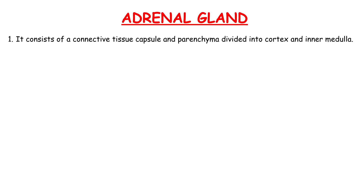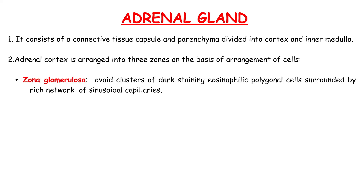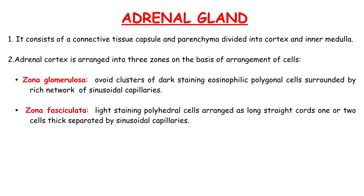Adrenal Gland. It consists of a connective tissue capsule and parenchyma divided into cortex and inner medulla. The adrenal cortex is arranged into three zones based on the arrangement of cells. Zona glomerulosa consists of clusters of dark staining eosinophilic polygonal cells surrounded by a rich network of sinusoidal capillaries. Zona fasciculata contains light staining polyhedral cells arranged as long straight cords, one or two cells thick, separated by sinusoidal capillaries.